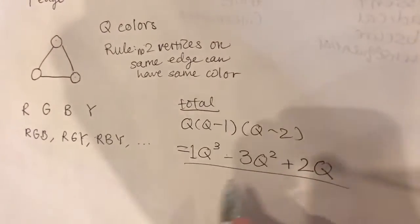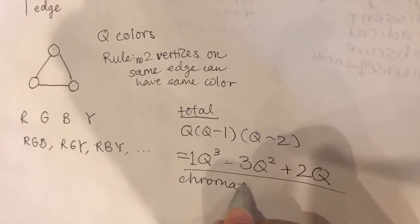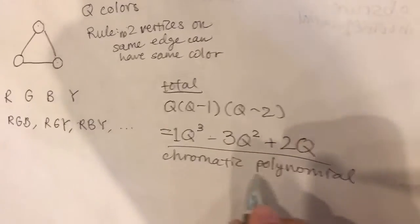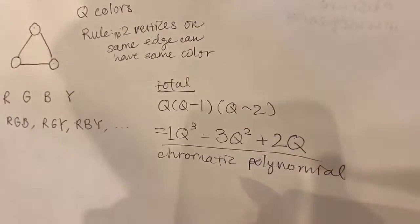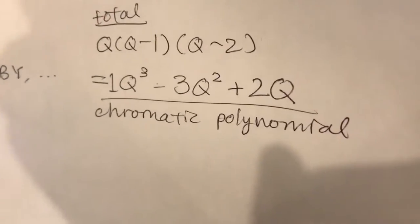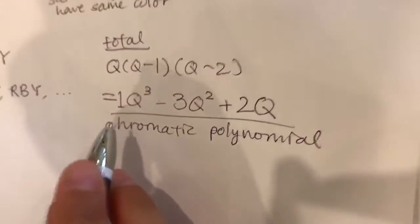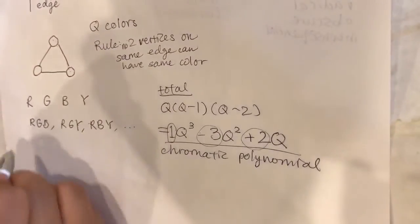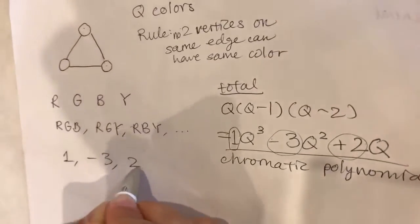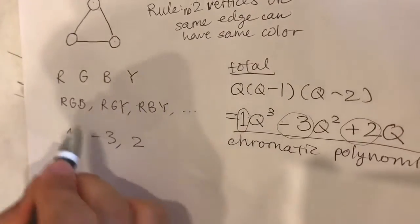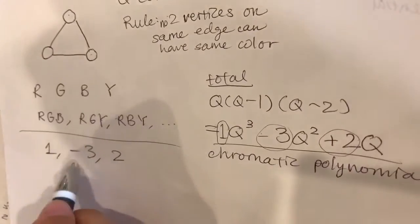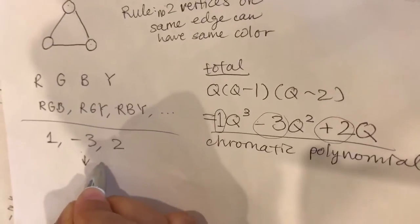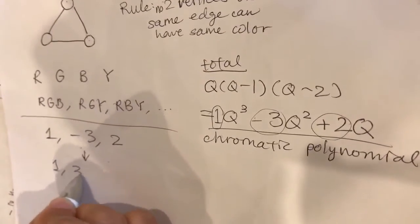Now what's this called? This is called a chromatic polynomial. Chromatic from chrome meaning color. Now what we're going to do is look at the coefficients: 1, negative 3, and positive 2. Now what we want to do is take the absolute value of each of the coefficients. What we get then is 1, 3, and 2.